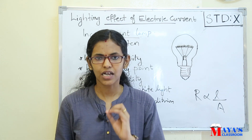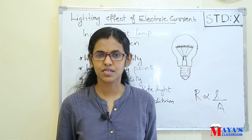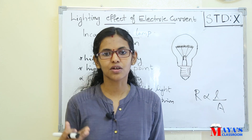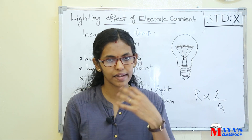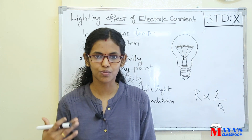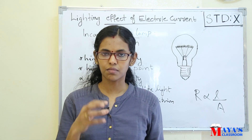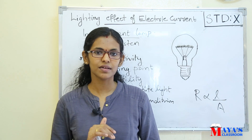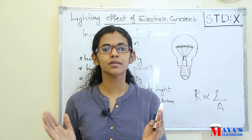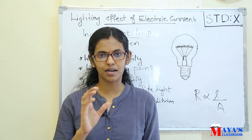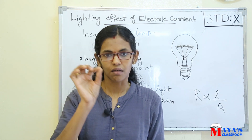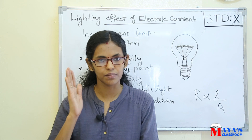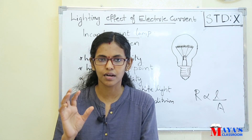Now let's talk about Nichrome. Nichrome has high resistivity and a high melting point. But Nichrome does not emit white light. Since Nichrome does not emit white light, it is not suitable as a lamp filament. The main disadvantage is that it converts electric energy into heat, releasing heat into the air rather than emitting light.